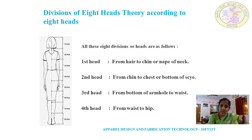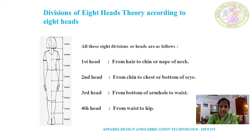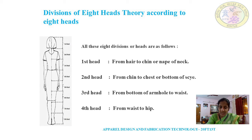The first head is from head to chin or nape of neck. See here — this is the hair and this is the chin part. So from hair till the chin it is one head. The next one, second head, is from chin to chest or bottom of the side line.